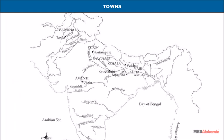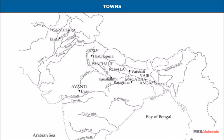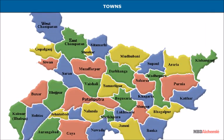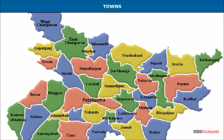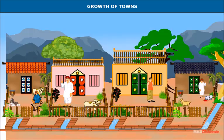Many new towns sprang up due to the growth of crafts and commerce and came to be known as capitals of the Mahajanapadas. Some of the more important towns were Vaishali, Banaras, Kaushambi, Patliputra, and Mathura. Most of these towns have been described in the literary texts of this period.